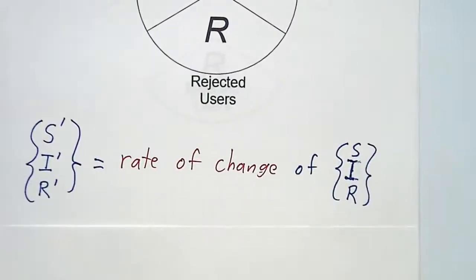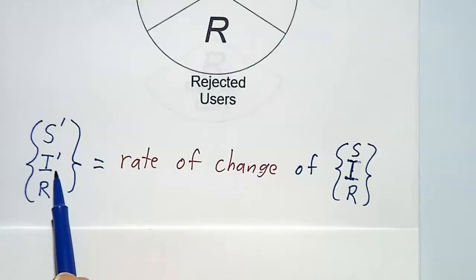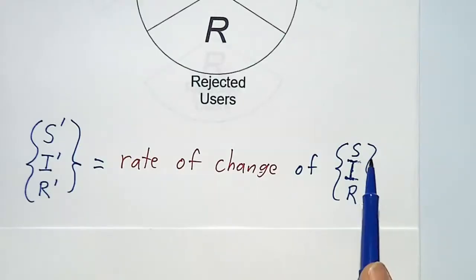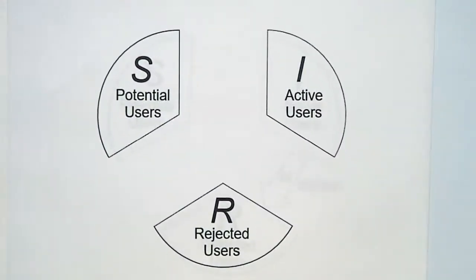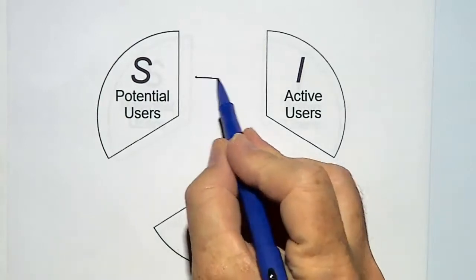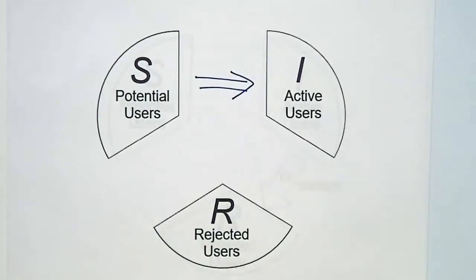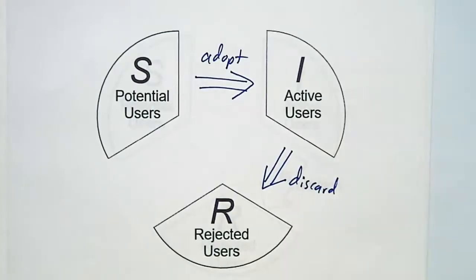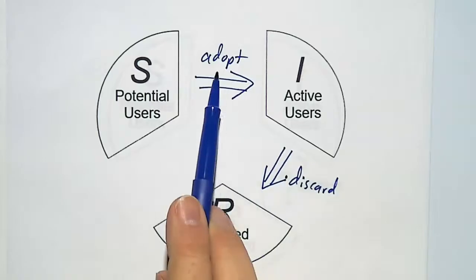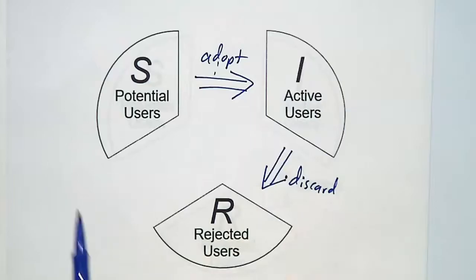What we want to do is figure out the rates of change — how fast are S, I, and R changing? We call those rates of change S prime, I prime, and R prime as a function of S, I, and R. Over time, some potential users might adopt the product and become active users. On the other hand, some active users may discard the product and become rejected users. We need to understand how fast each of these happens.